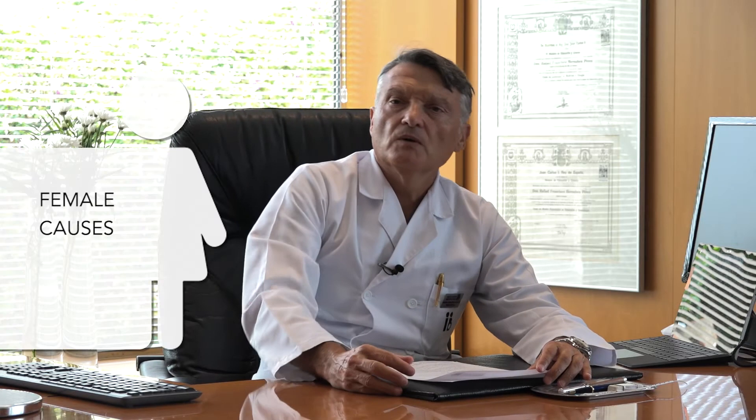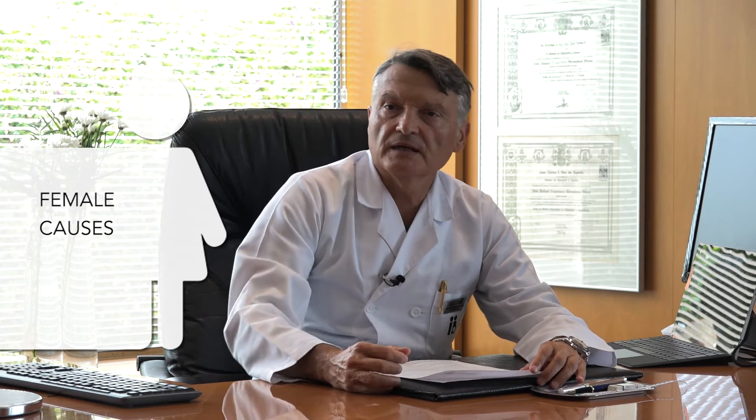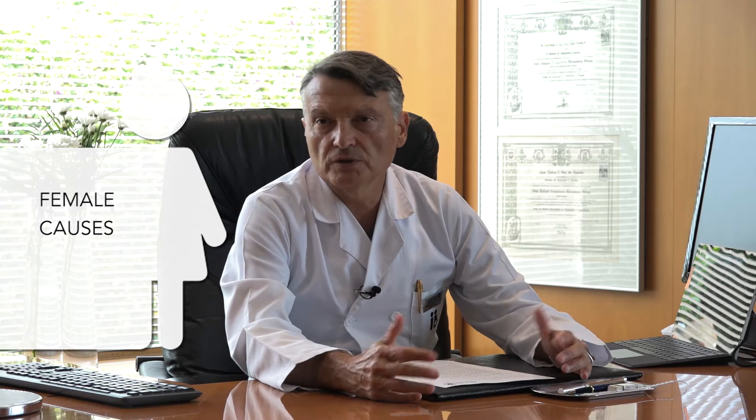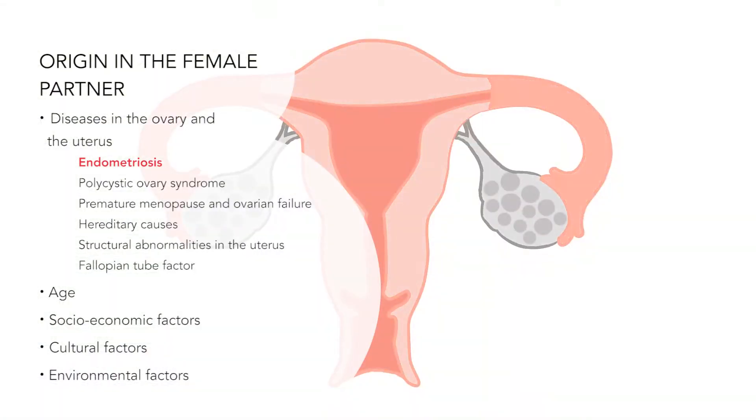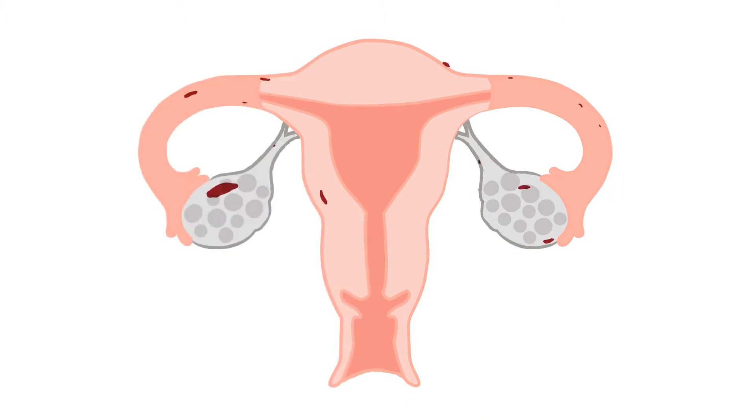The causes of sterility in women can be located in the ovaries, the uterus, the fallopian tubes, or in the genitals in general. The most frequent causes are, on the one hand, endometriosis — that is, the presence of uterine tissue outside its natural location. As well as causing painful periods and pelvic pain, endometriosis has an impact on fertility in women.